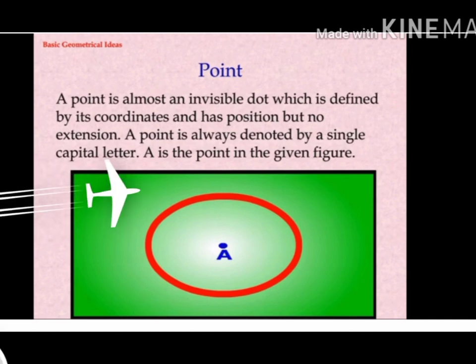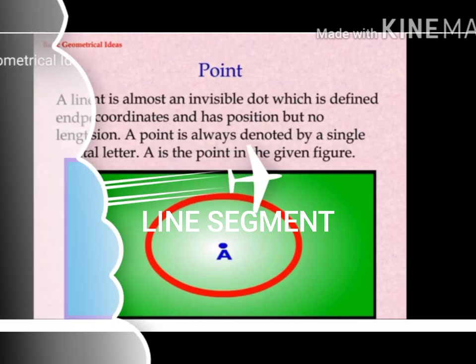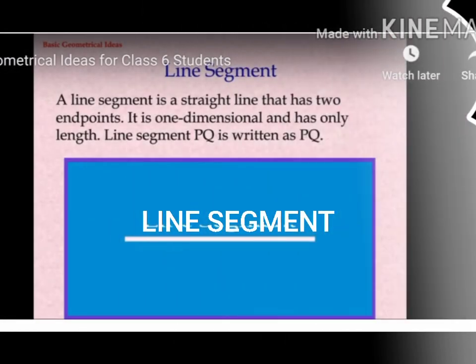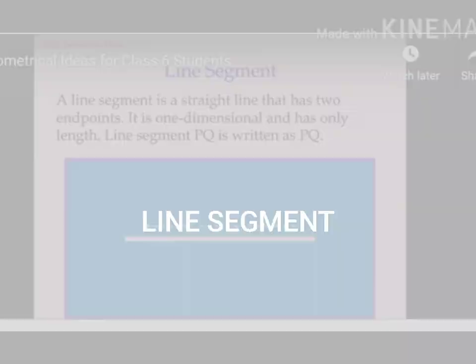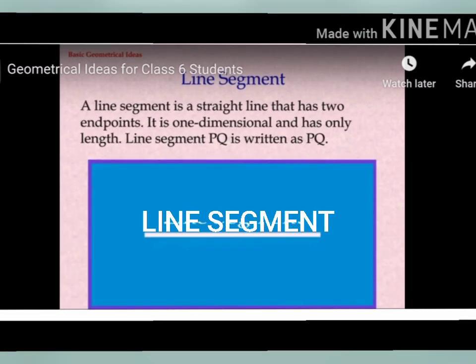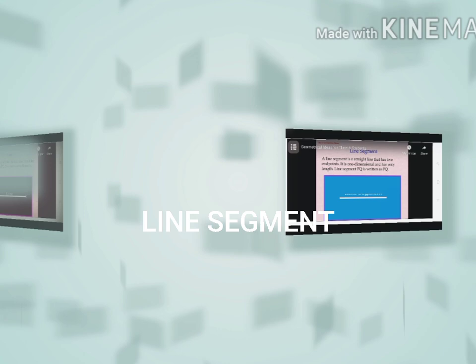The next one is Line Segment. A line segment is a straight line that has two endpoints. It is one dimensional and has only length. Line Segment PQ is written as PQ.